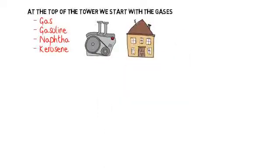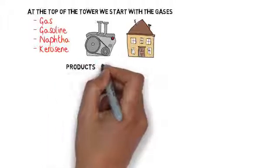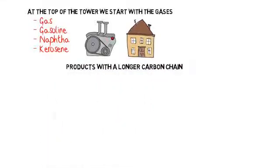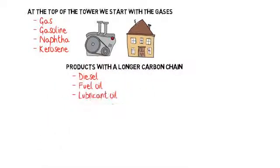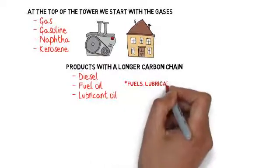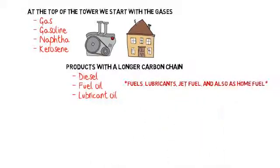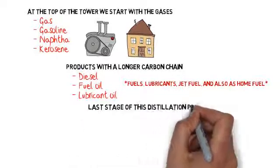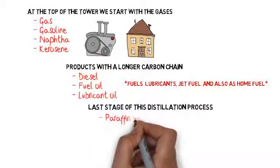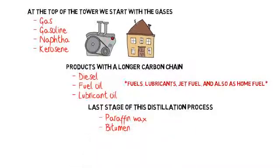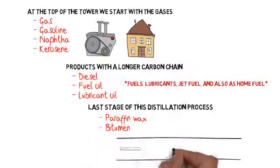As we go down, we start to get heavier products with a longer carbon chain. So diesel, fuel oil and lubricant oil is obtained at this level. These products are used as fuels, lubricants, jet fuel, and also as home fuel used in internal heating and cooking. At the last stage of this distillation process, we get paraffin wax and bitumen, which are used to make tar on the road.